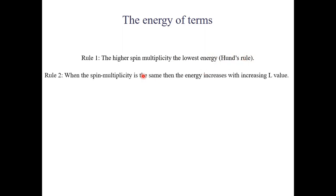There is a second rule: when the spin multiplicity is the same, the energy decreases with increasing L value. So an S term has higher energy than a P term, which has higher energy than a D term — this is actually the inverse of what you know from orbitals, where S orbitals have lower energy than P or D orbitals when the quantum number N is the same.